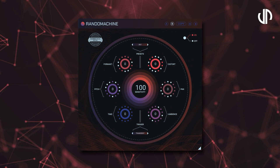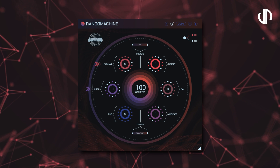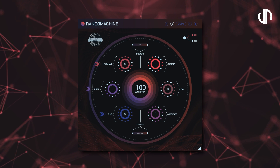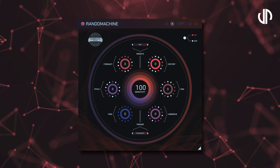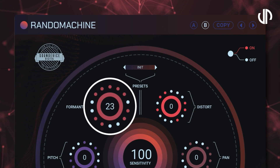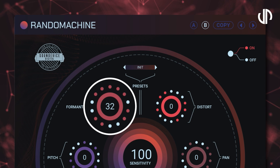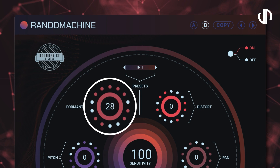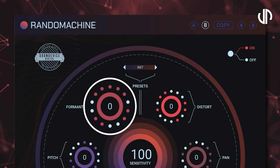Random Machine has six distinct effects integrated into it: Formant, Pitch, Timing, Ambience, Pan, and Distortion. Each can be randomised independently. The percentage shown represents the amount of randomisation you intend to apply. Setting it to zero will put it in a bypass state, thus consuming no CPU resources.